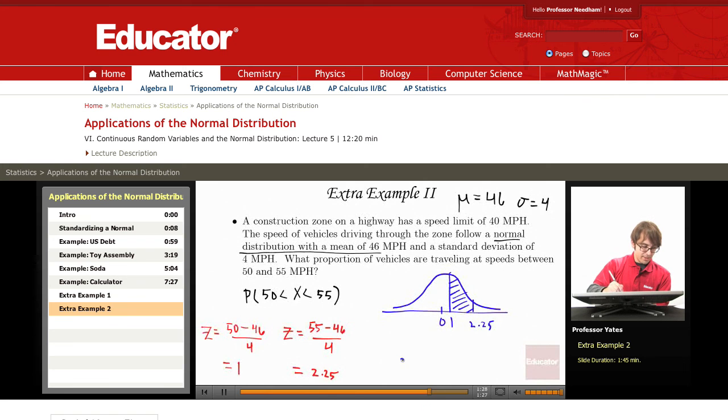I get 0.9878. I look up 1 in my chart, and that gives me 0.8643, and this gives me a final probability of 0.1235.